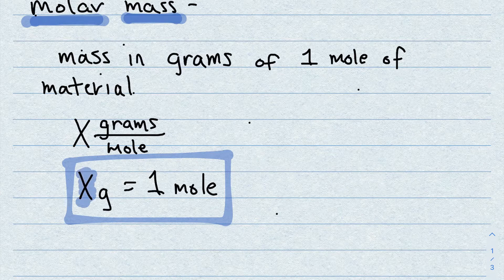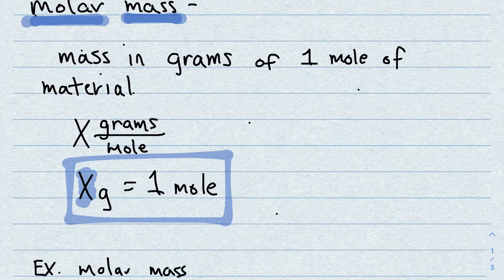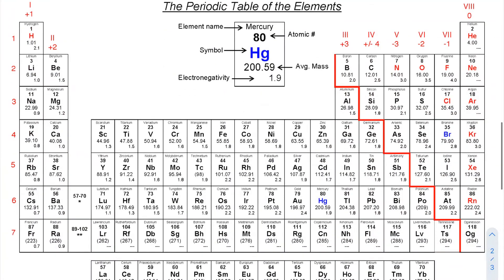The atomic mass and the molar mass are the same number, just with different units. For example, what is the molar mass of sodium? All you do is look at the periodic table and you see that sodium has a mass of 22.9 — that's in atomic mass units when talking about a single atom.